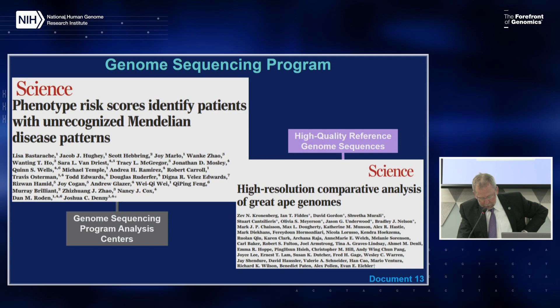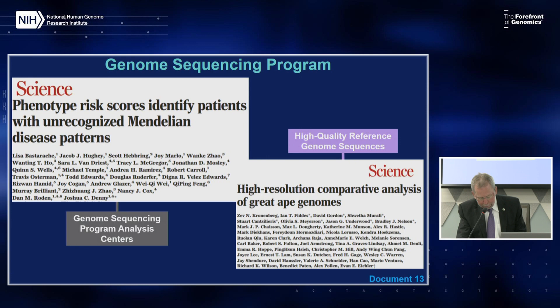Other activities within the Genome Sequencing Program include investigator-initiated work to generate high-quality human and non-human primate reference genome sequences. The two groups NHGRI funds recently published a high-resolution comparative analysis of chimpanzee, orangutan, gorilla, and human genome sequences. They estimate that 83% of ape genomes can now be compared in a multi-sequence alignment, facilitating identification of structural variation and human-specific variation. The paper also describes 1,700 fixed human-specific structural genomic variants identified using a contiguous, reference-free genome sequence assembly method.